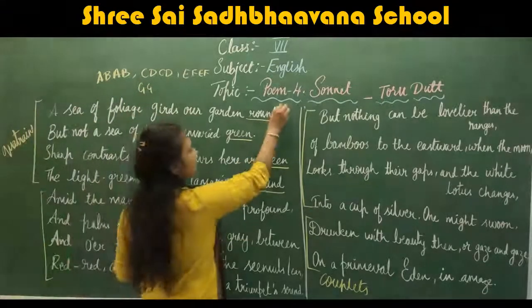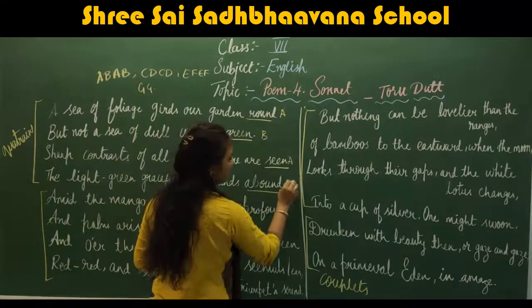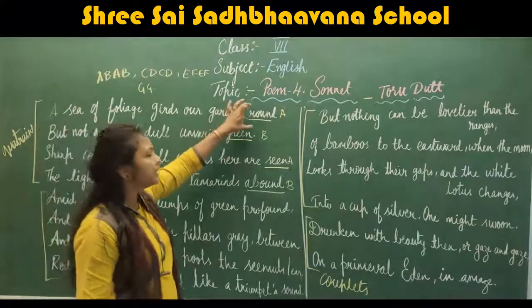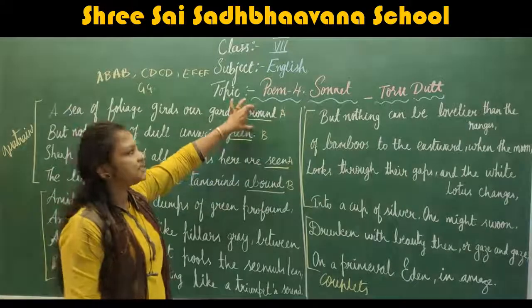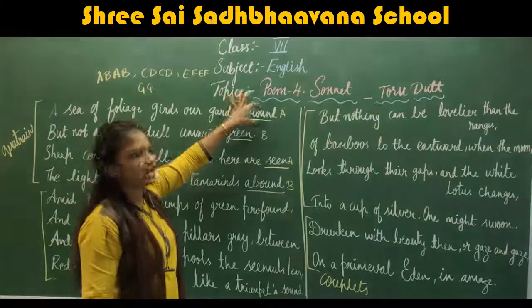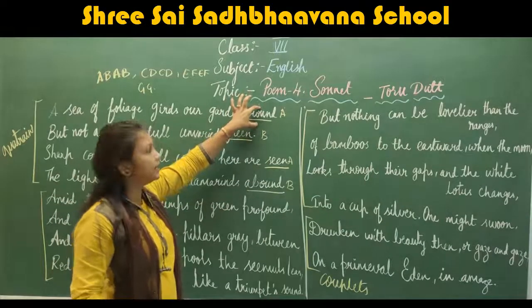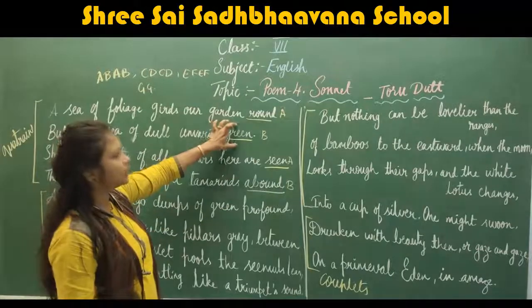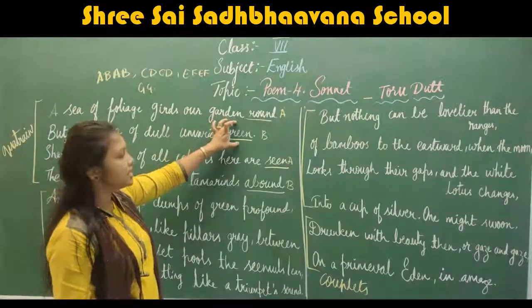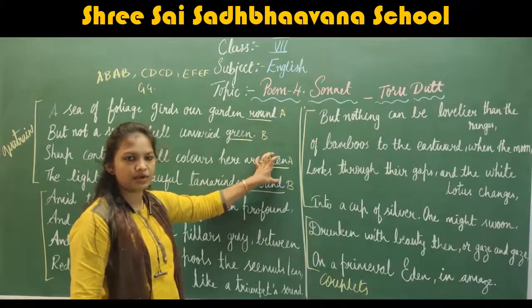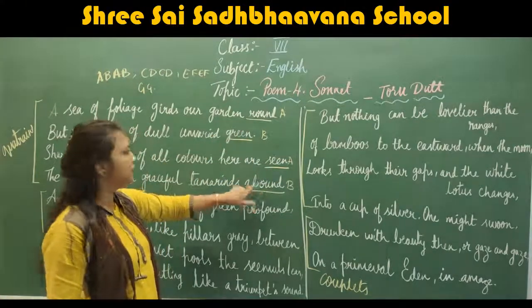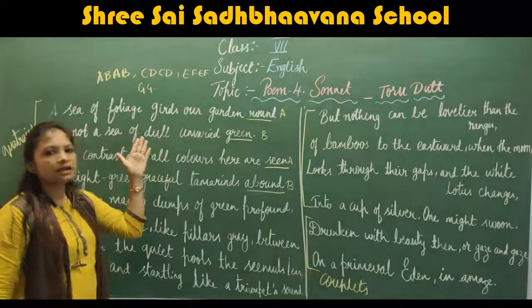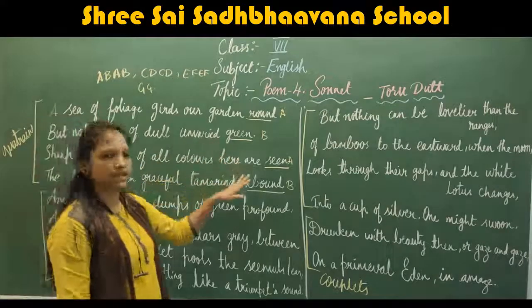In English literature the rhyming scheme is marked A-B-A-B, meaning the last word of the first line rhymes with the last word of the fourth line, and the last word of the second line rhymes with the last word of the third line. For example: 'round' and 'abound,' or 'green' and 'scene.'